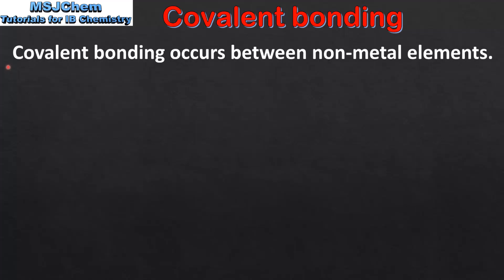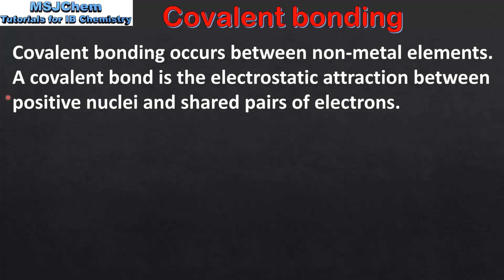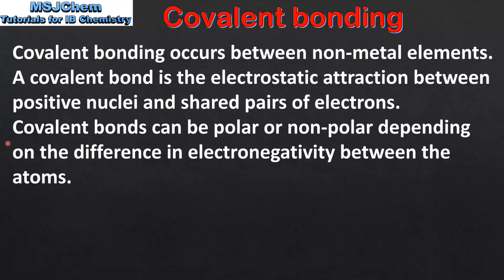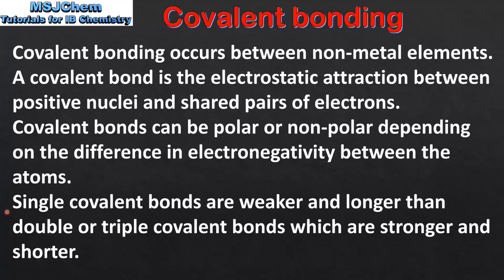So let's end with a summary. Covalent bonding occurs between non-metal elements. A covalent bond is the electrostatic attraction between positive nuclei and shared pairs of electrons. Covalent bonds can be polar or non-polar depending on the difference in electronegativity between the atoms. Single covalent bonds are weaker and longer than double or triple covalent bonds, which are stronger and shorter.